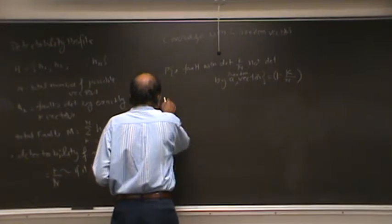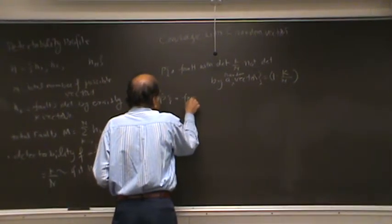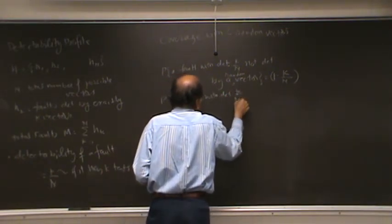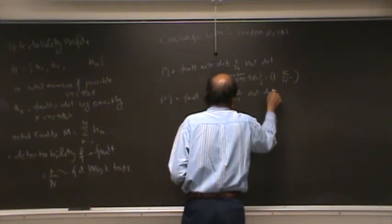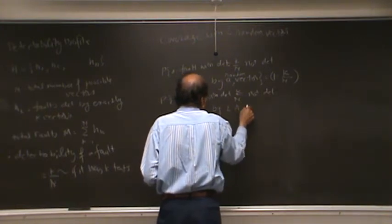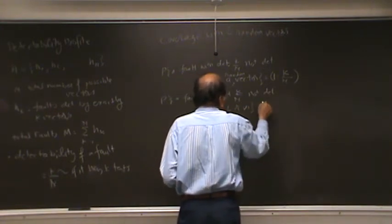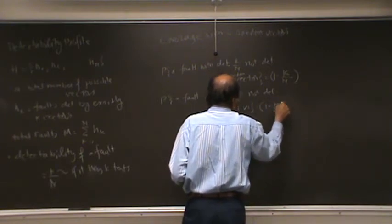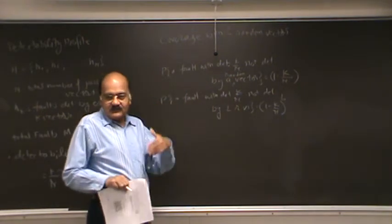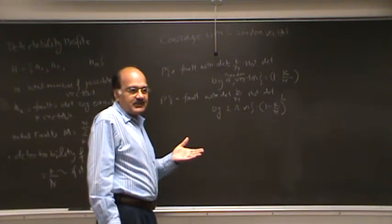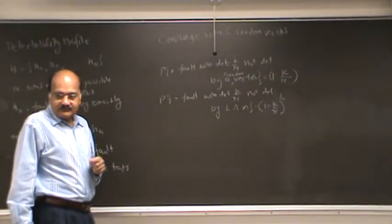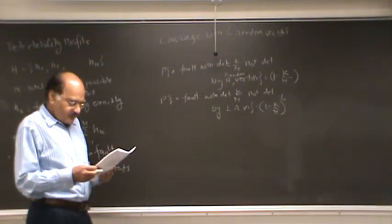What if we apply l vectors? Probability that a fault with detectability k by n not detected by l random vectors. Let me abbreviate here. And if it is equal to 1 minus k by n, raised to l. Not detected by first, not detected by second. Each application is statistically independent because testing is random. So each time a vector is randomly chosen.